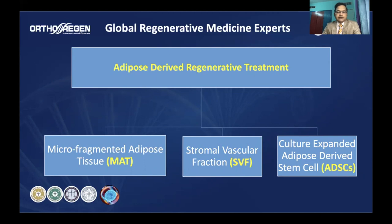In this lecture we will discuss three adipose-derived regenerative products: micro-fragmented adipose tissue (MAT), stromal vascular fraction (SVF), and culture-expanded adipose-derived stem cells.